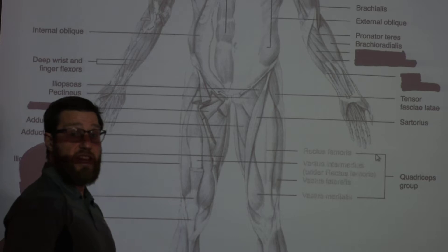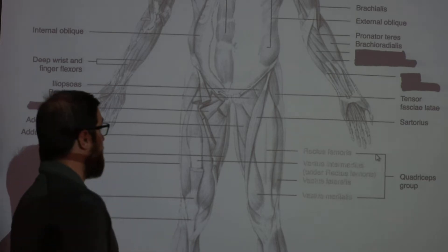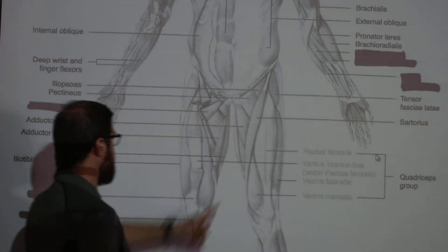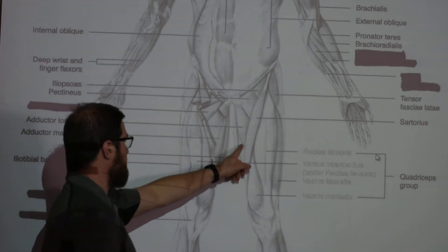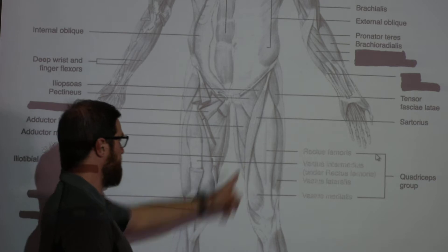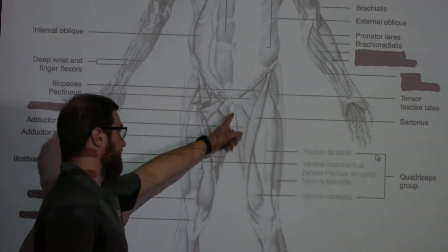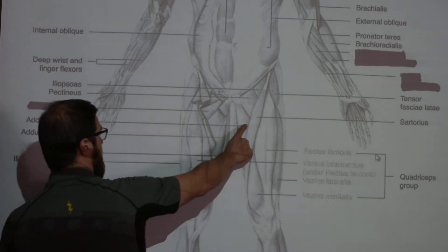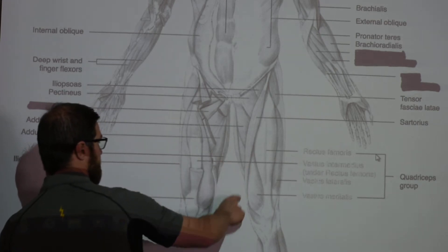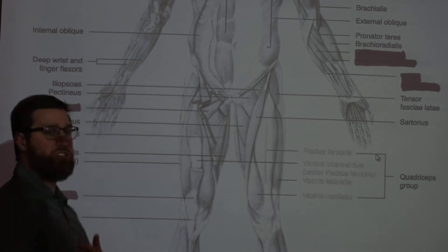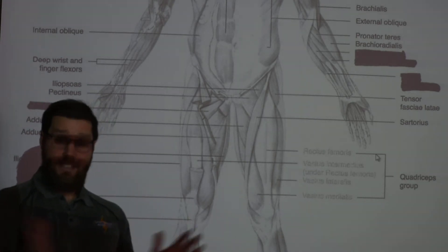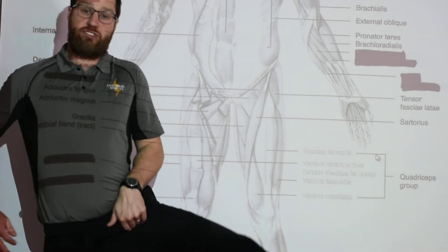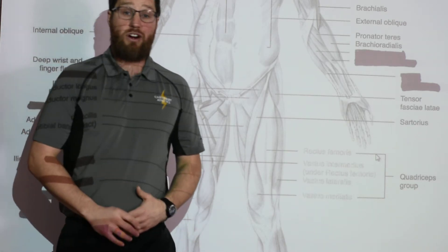Moving to the leg adductors — your pectineus, adductor longus, adductor magnus, and gracilis. It's helpful to know them in that order. The adductor magnus is deeper on this side. All four are involved in leg adduction — when you bring your leg in toward the midline, all four muscles are working to adduct your hip.